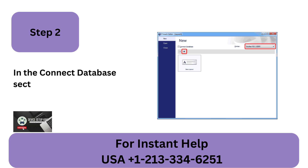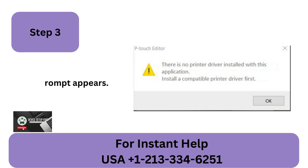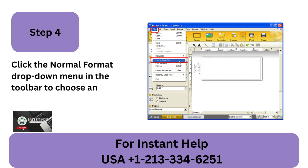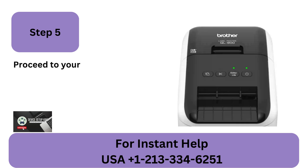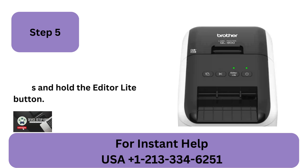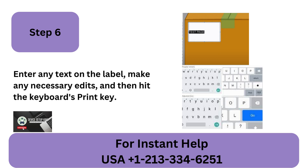Step 2: In the Connect Database section, click the right arrow button. Step 3: Click OK when the P-Touch Editor prompt appears. Step 4: Click the Normal Format drop-down menu in the toolbar to choose an alternative format. Step 5: Proceed to your label printer and, in approximately 2 seconds, press and hold the Editor Lite button. Step 6: Enter any text on the label, make any necessary edits, and then hit the keyboard's Print key.